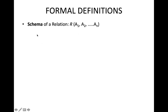We have already seen what a schema is. The schema of a relation is defined as R(A1, A2, ..., An), where R is the name of that relation and A1, A2, etc. are the attributes of that relation. This is known as the schema of a relation.